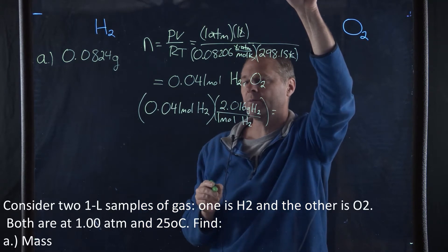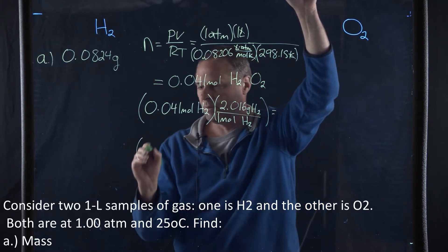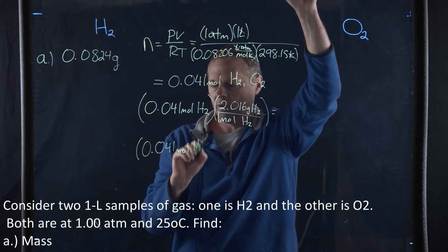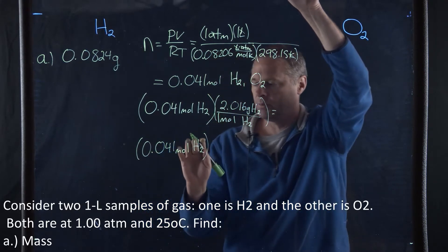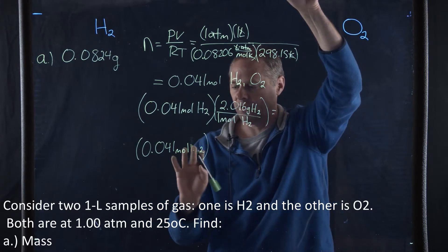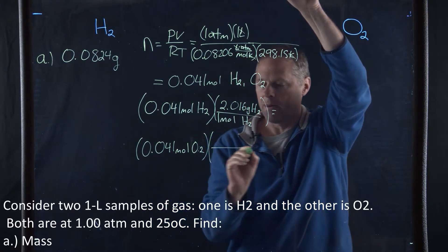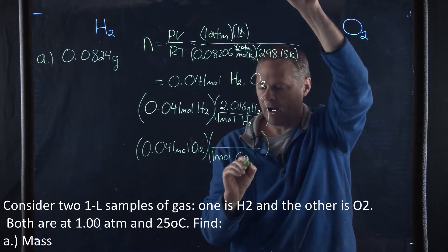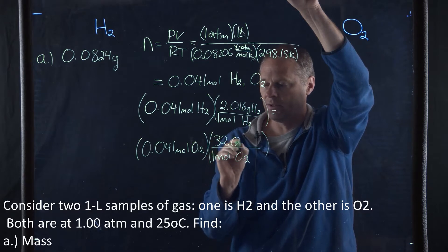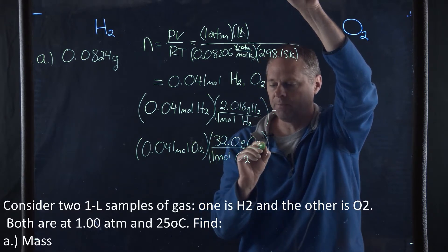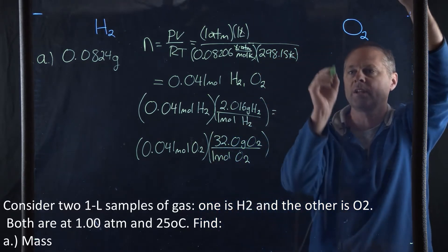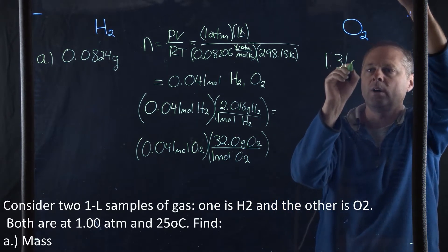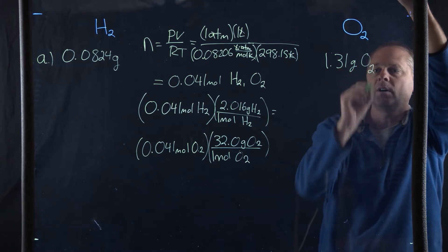Now if we do the same thing for oxygen, that's going to be 0.041 moles of oxygen. One mole of oxygen is equivalent to 32.0 grams of oxygen. Doing that arithmetic, we end up getting 1.31 grams of oxygen.